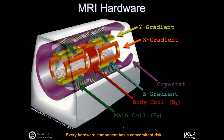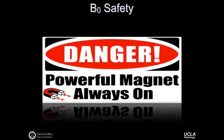There are several MR hardware components that give rise to different electromagnetic fields: the gradients, the body coil which generates the RF pulses, and the main coil responsible for sustaining the external B0 field. Every hardware component has some concomitant risk associated with it.